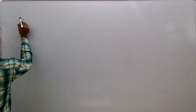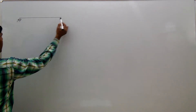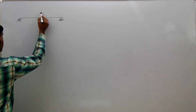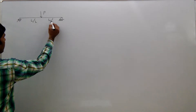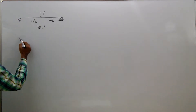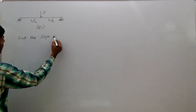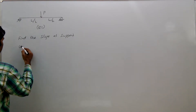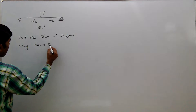A simply supported beam with half span L and half span L, carrying a central point load P and having flexural rigidity EI. Find the slope at the support using the strain energy method.